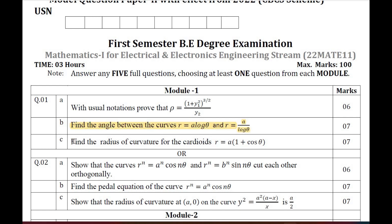Question Number 1C: find the radius of curvature for the curve r = a(1 + cos θ). Question Number 2A: show that the curves r^n = a^n cos θ and r^n = b^n sin θ cut each other orthogonally. Question Number 2B: find the pedal equation for the curve r^n = a^n cos θ. Question Number 2C: show that the radius of curvature for the given curve is a/2.